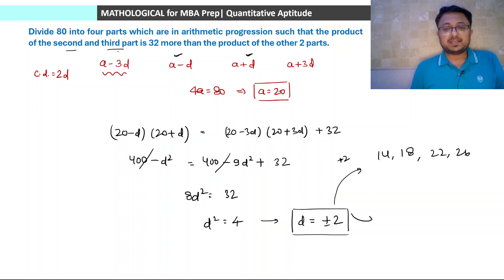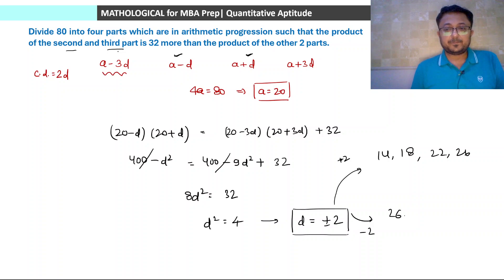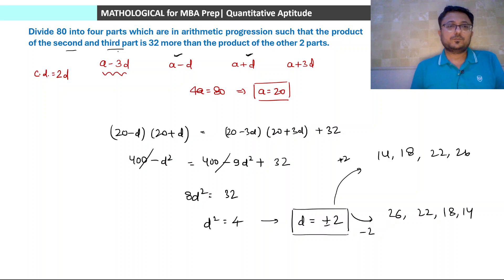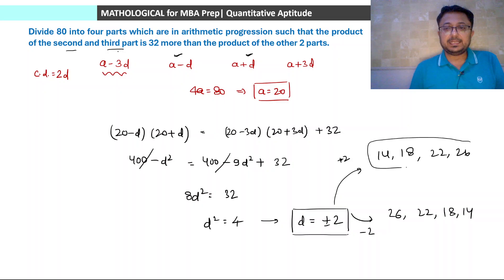If common difference is +2, first term is 20 minus 6 = 14, then 18, 22, and 26. If d is equal to minus 2, then the first term becomes 26, giving reverse order: 26, 22 - no difference in the set. So the 4 parts are 14, 18, 22, and 26.